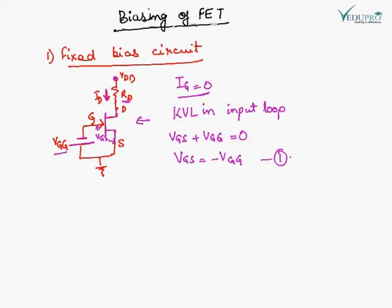Applying KVL in the input loop, input loop is starting from VGG, and VGS is the drop in gate and source junction. So the KVL will be VGS plus VGG equals zero, as the current is zero here. Now, VGS equals minus VGG. ID is given by IDSS times 1 minus VGS upon VP. This is Shockley's equation.